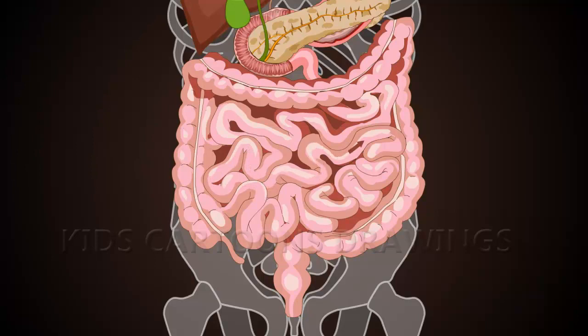The bolus reaches the ileum, where remaining nutrients are absorbed. The bolus then passes into the large intestine through the ileocecal valve. The first portion of the large intestine is called the cecum. The main function of the large intestine is to absorb water and electrolytes.